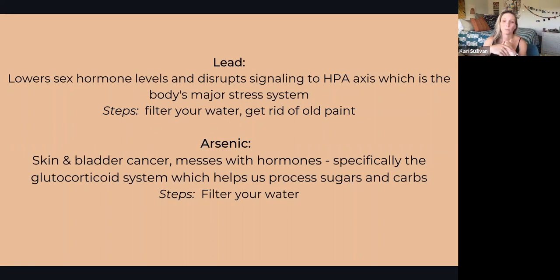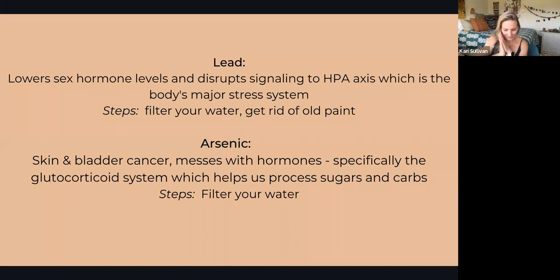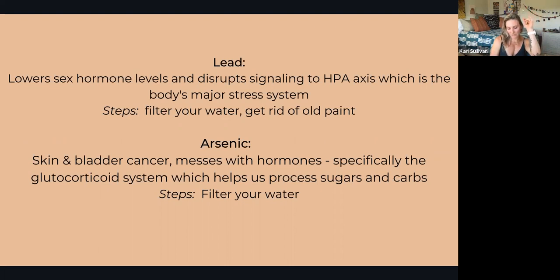Organophosphate pesticides decrease testosterone and alter thyroid levels. Avoid by buying organic when possible — anything with skin you eat should be organic. If you peel the skin off, it's less of a concern. Glycoethers are found in paints, cleaning products, brake fluid, and cosmetics. They shrink testicles, and are linked to asthma and allergies. This is why examining what we're putting on our skin — our biggest sponge — is very important.